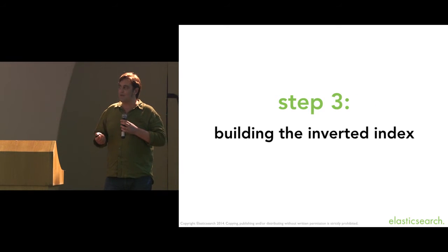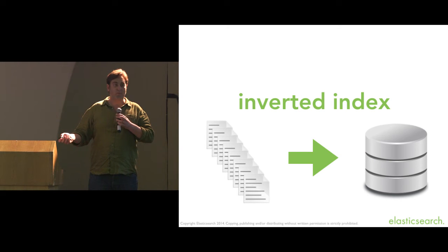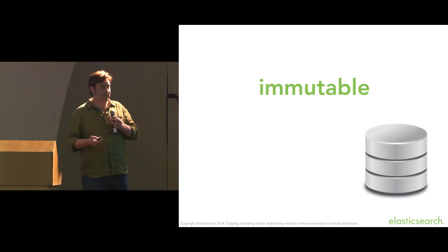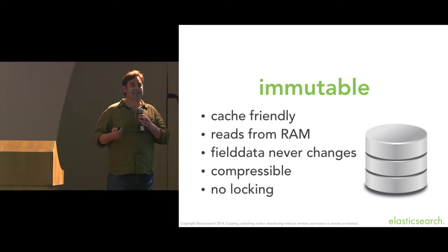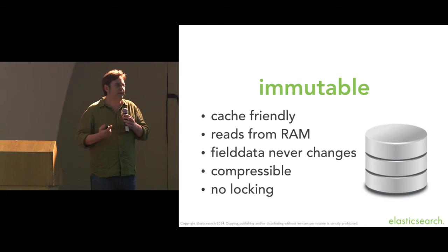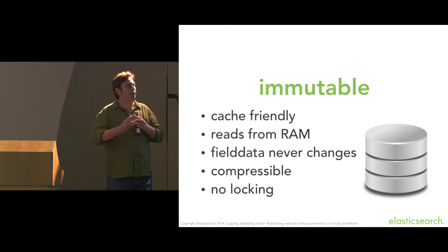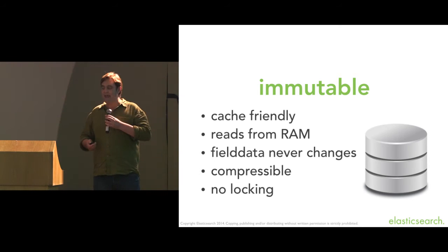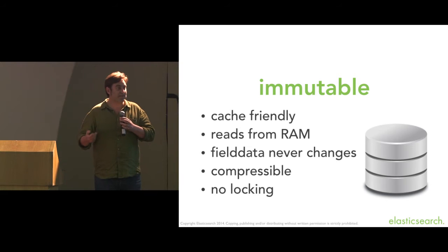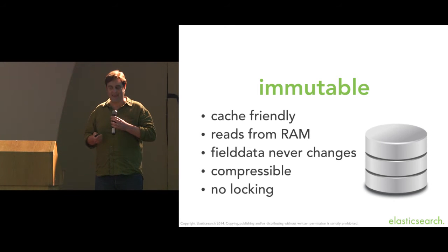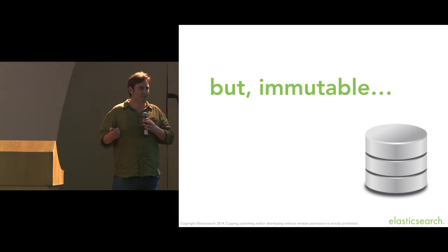To build this inverted index, we collect all documents in our corpus, process them, and write the inverted index to disk. That inverted index is immutable, and immutability gives it very important properties. It's cache-friendly — once you've read it from disk, you'll basically be reading from RAM from then on. The field data never changes, so once you've un-inverted the index, you don't need to do it again. You can compress it easily, it uses less space on disk and in the file system cache, and there's no locking when writing. The problem is it's immutable — you can't change anything.